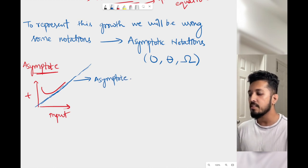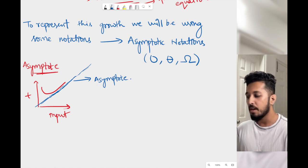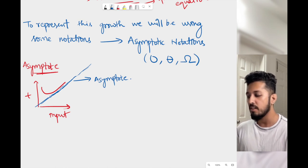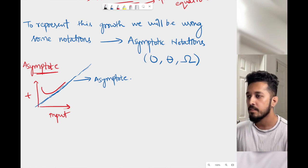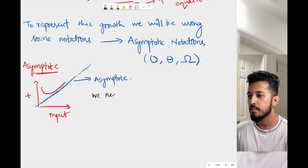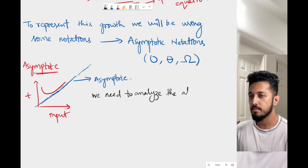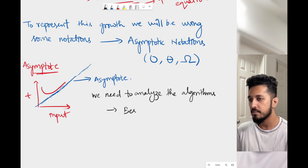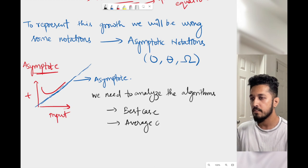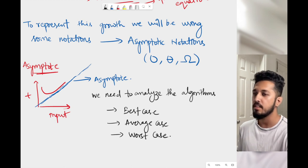To analyze algorithms, we need to see that for some inputs an algorithm might take less time and for others it might take longer. We need to analyze algorithms for the best case, average case, and worst case.